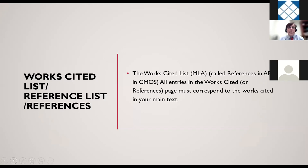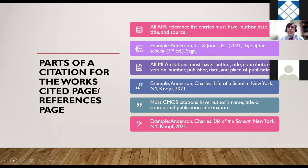For the works cited page in MLA, or the reference list in both APA and Chicago Manual style, all entries must correspond to the works cited in your main text. In other words, if you're using a source in the main text, the full source must appear in the works cited or reference list. For APA format, reference list entries must include author, date, title, and source.